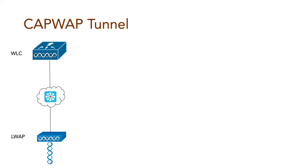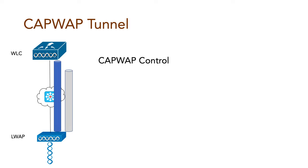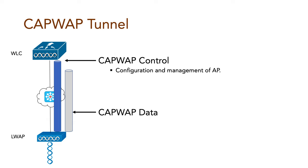The CAPWAP relationship consists of two separate tunnels: the CAPWAP Control Tunnel and the CAPWAP Data Tunnel. The CAPWAP Control Tunnel is responsible for messages related to the configuration and management of the access point. These messages are authenticated and encrypted, and use UDP port 5246.